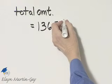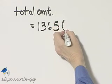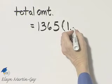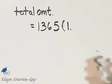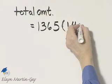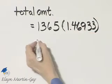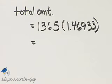If you look that up, you'll find the factor is, I'm going to go ahead and use parentheses here, 1 decimal point, and then you'll see that it's 46933. So you'll simply multiply these two amounts.